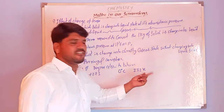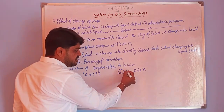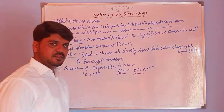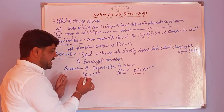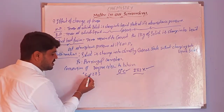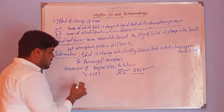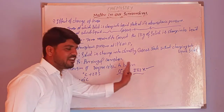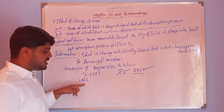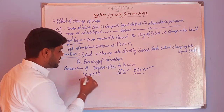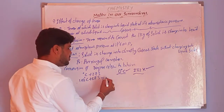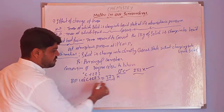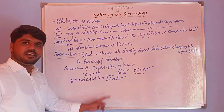The freezing point of water is 0°C, which equals 273 K. From this we get the formula: Kelvin = degree Celsius + 273. For example, the boiling point of water is 100°C. To convert: 100 + 273 = 373 K. So the boiling point of water in Kelvin is 373 K.